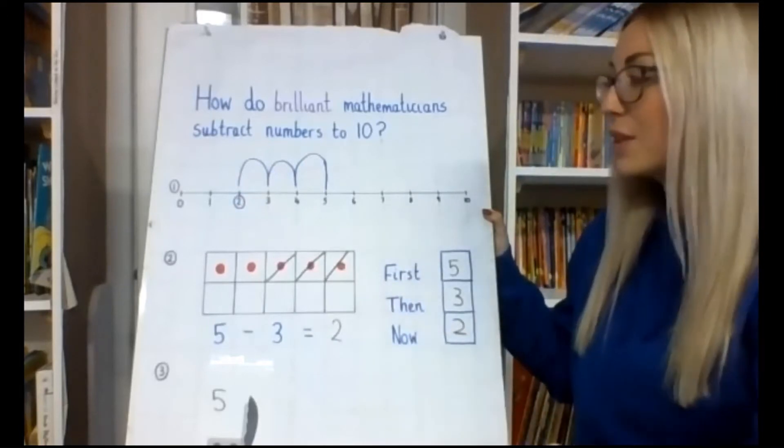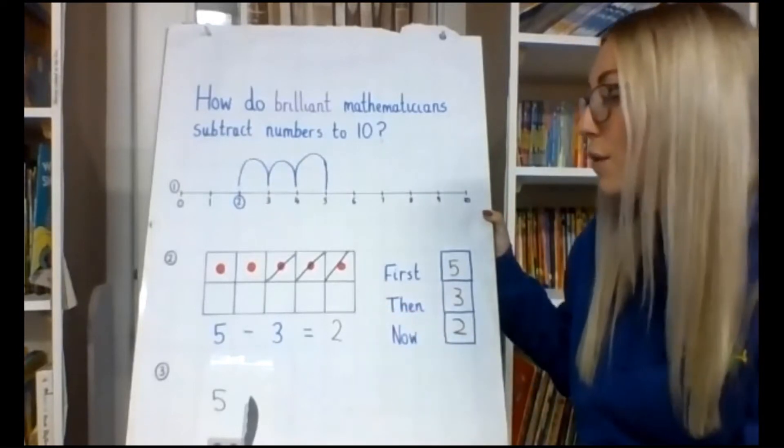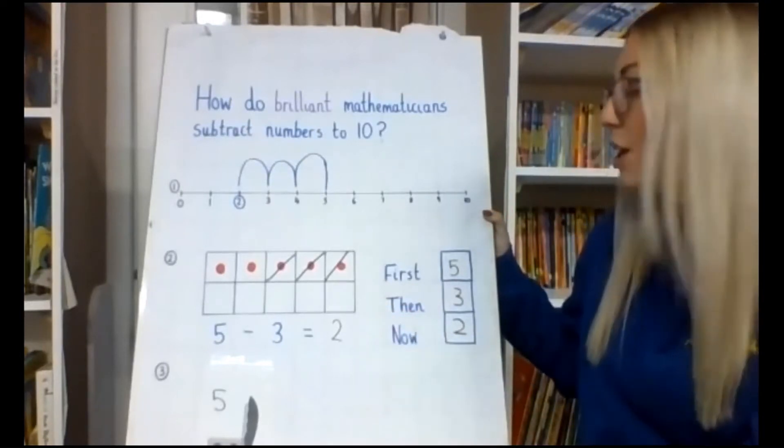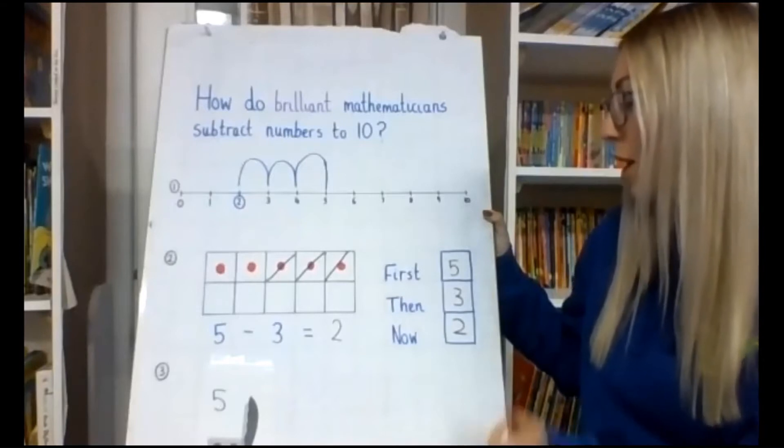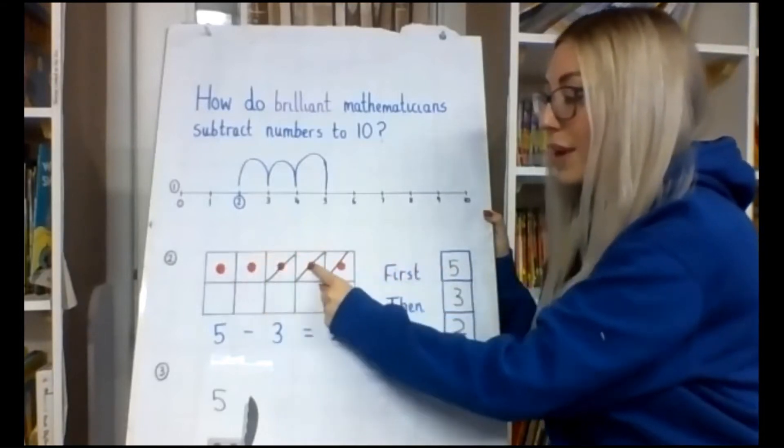The second method that we looked at this week was using our 10 train, and we used the analogy of the children being on a bus. So there were, for example, 5 people who were on the bus. 1, 2, 3, 4, 5.